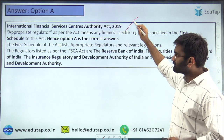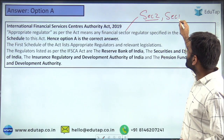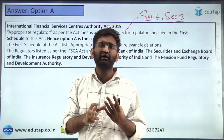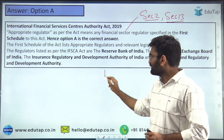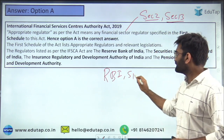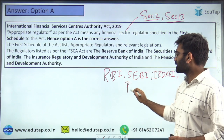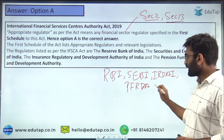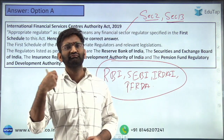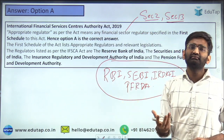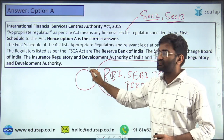The definition of 'appropriate regulator' is found in Section 2 of the Act. Section 13 provides the power to IFSCA to carry out the functions of these four regulators, which are RBI, SEBI, IRDAI, and PFRDA — all part of the First Schedule of this Act. The functions carried out by these regulators for regulation of financial institutions within India will be taken up by IFSCA only for the IFSCs.